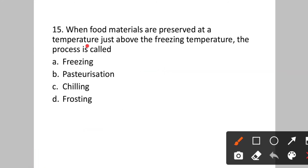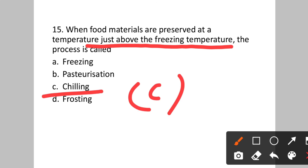Question number fifteen/sixteen: When food materials are preserved at a temperature just above the freezing temperature, the process is called? Option A: freezing. B: pasteurization. C: chilling. D: defrosting. Just above the freezing temperature, this process is called chilling. Option C will be the correct answer.